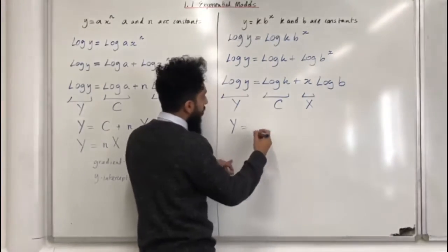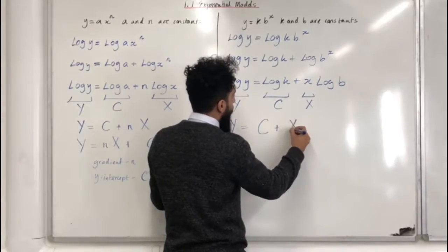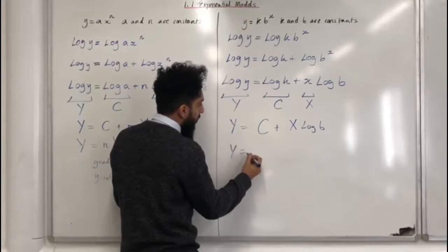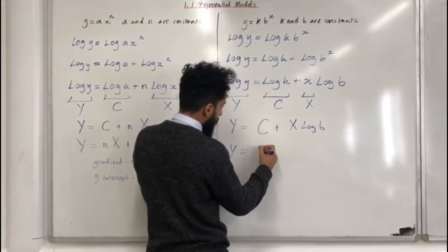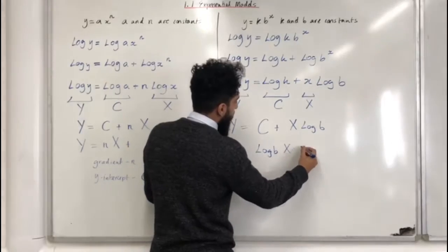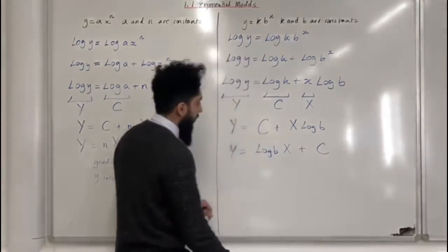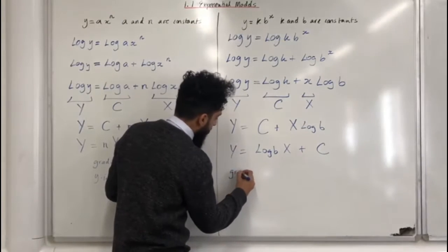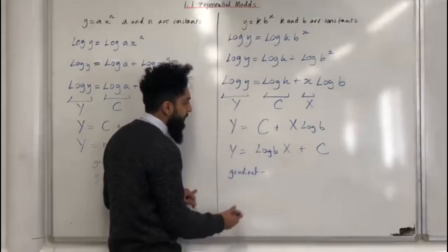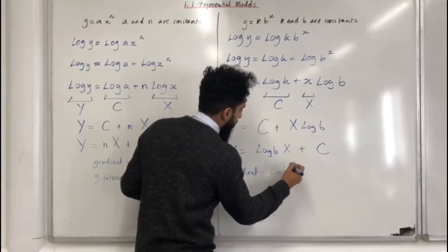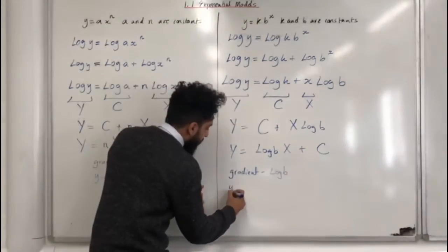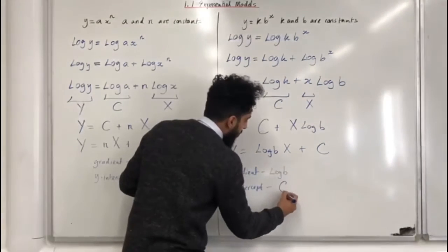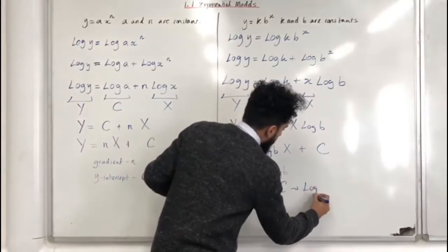Capital Y is equal to capital C plus capital X log b. Rewriting this, capital Y is equal to log b times capital X plus capital C. So for this particular equation, my gradient is going to be the coefficient of capital X, which is log b. And my y-intercept is going to be capital C, which is log k.